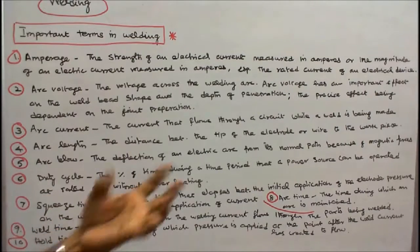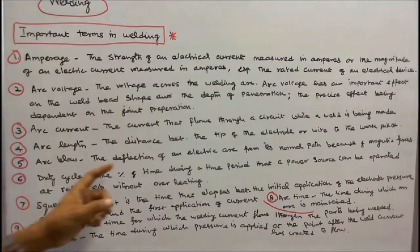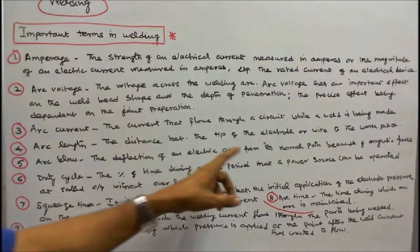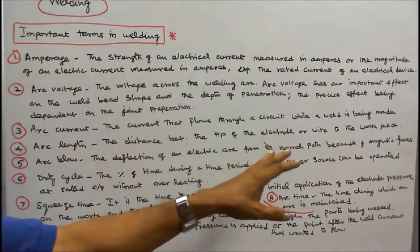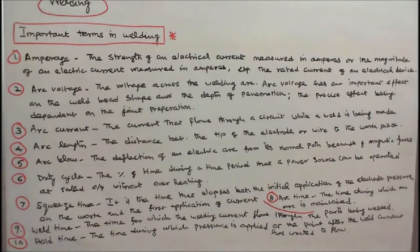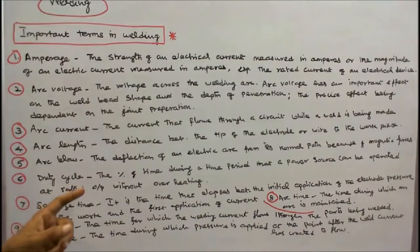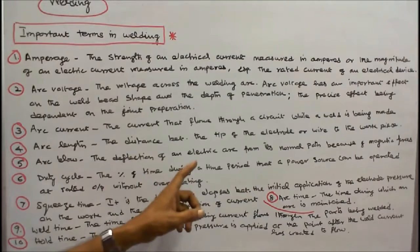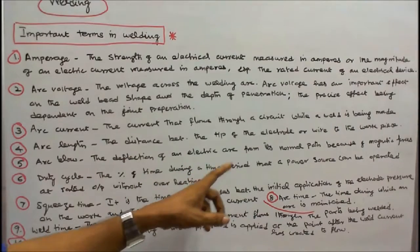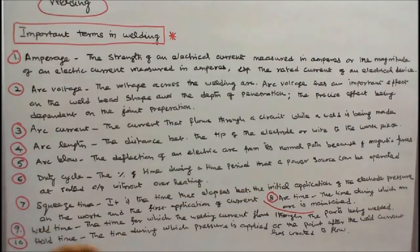Number five, arc blow: the deflection of an electric arc from its normal path because of magnetic forces. Number six, duty cycle: the percentage of time during a time period that a power source can be operated at rated output without overheating.